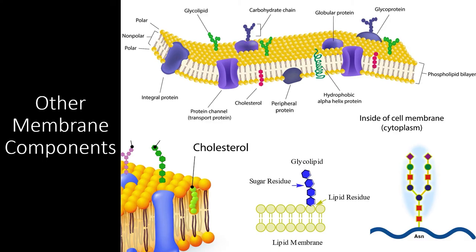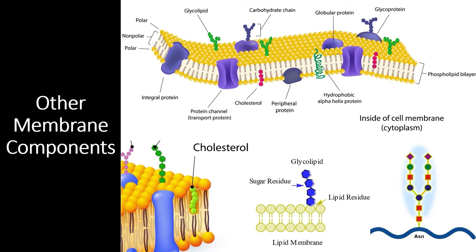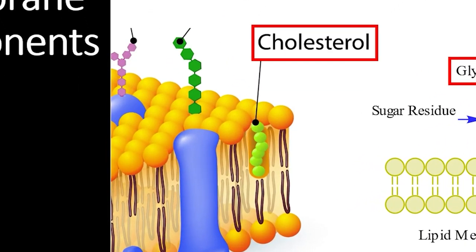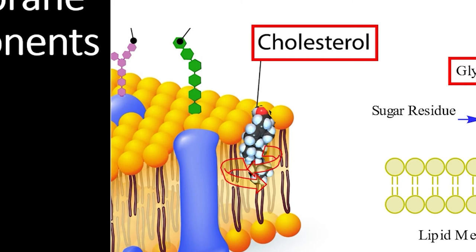While phospholipids and membrane proteins are very important components when creating a functional plasma membrane, several other components are required for a cell to fully integrate and interact with its environment. Some of these other components include steroids like cholesterol, glycolipids, and glycoproteins. Let's take a look at steroids like cholesterol, which play an integral role in determining how fluid the plasma membrane is. Cholesterol is a steroid lipid molecule that can be embedded in the plasma membrane. Because of its shape, cholesterol creates many nonpolar interactions with the hydrophobic tails of phospholipid molecules, which helps create a more rigid and impermeable cellular membrane.